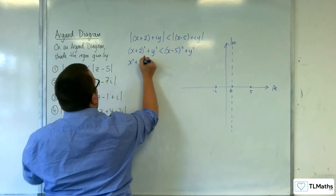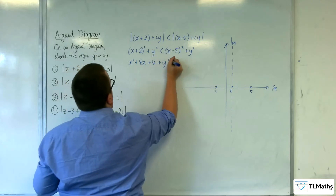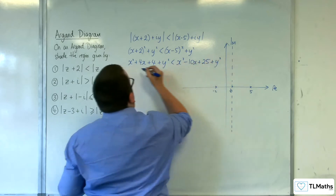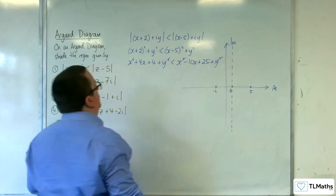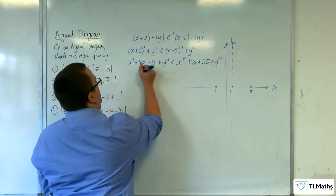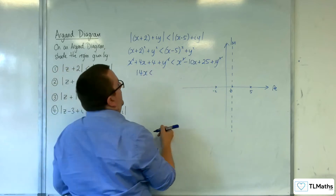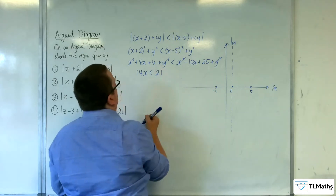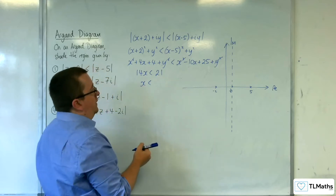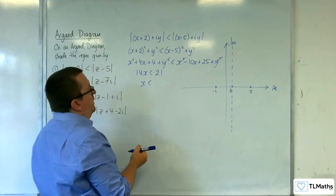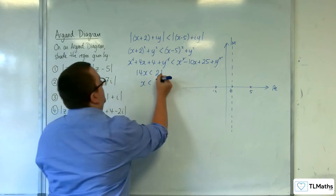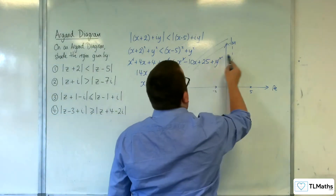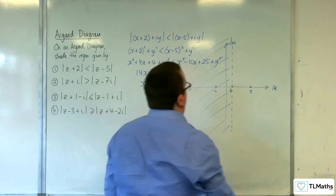The y squareds can cancel. I'll expand first. The x squareds can go, y squareds can go. Move all the x's onto the left-hand side, so we've got 14x, and 4 can go onto the right-hand side, so that gets us 25 take away 4, so 21. Divide both sides by 14 — 21 over 14 is the same as 3 halves. So we have x is less than 3 halves, which means we are looking at this side, and that's the side that should be shaded.